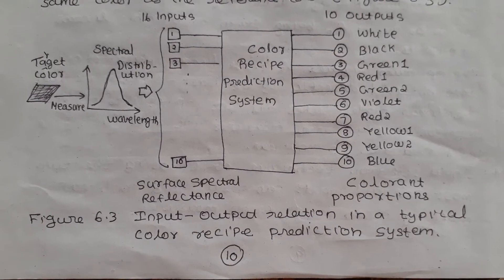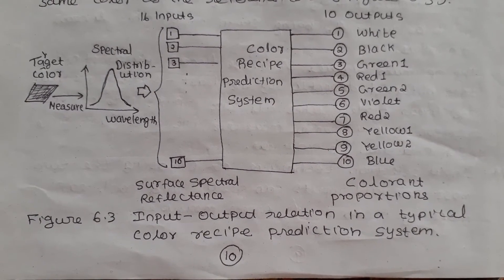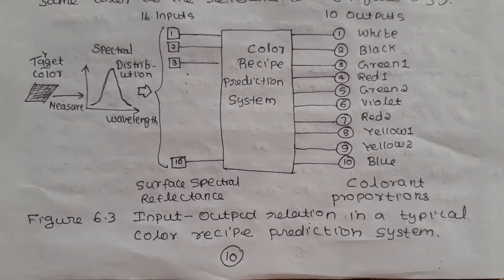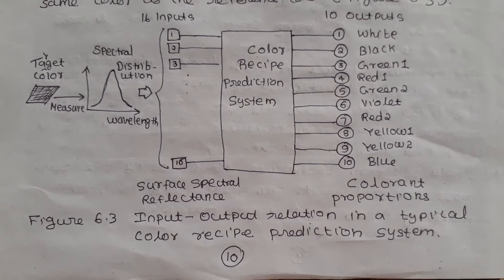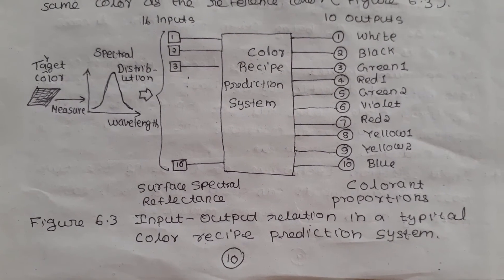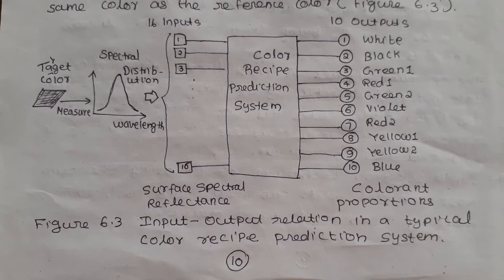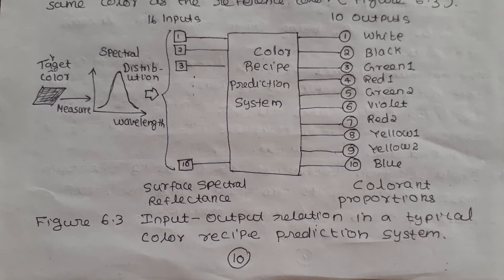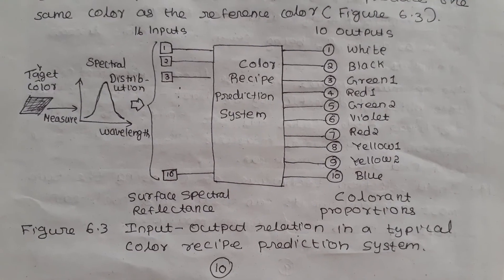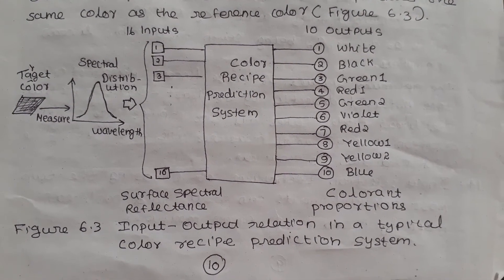There is a formula for transforming the surface spectral reflectance of color to perceptual attributes: lightness, hue, and chroma. These three values must be more suitable for treating color in a linguistically meaningful way than the 16 spectral values.